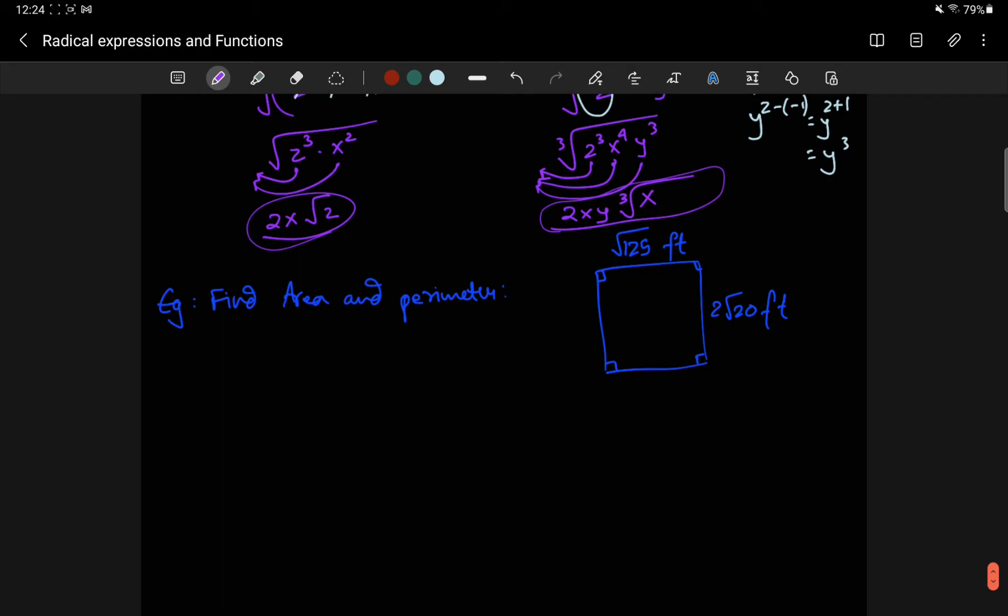Now, here's a problem where you may have to add as well as multiply. Find the area of this rectangle and the perimeter. So, let's start with perimeter.